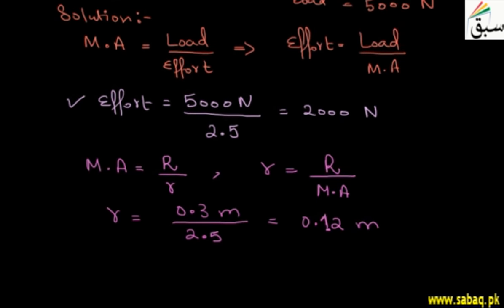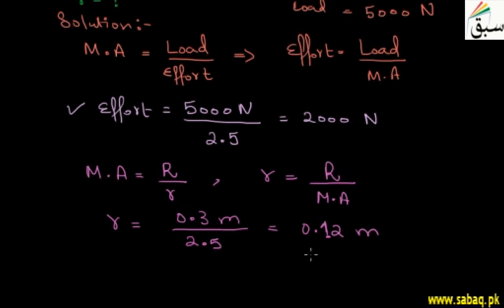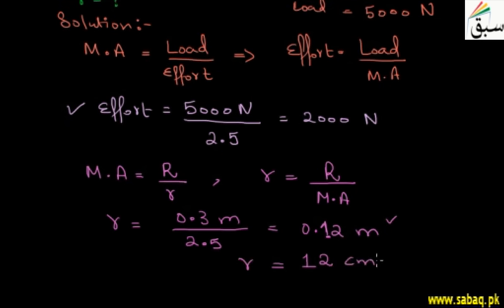So the answer is 0.12 meters. If you want to convert it to centimeters, multiply by 100, which gives 12 centimeters. So r equals 12 centimeters. Students, we have solved both our unknown quantities and the problem is complete.